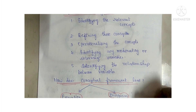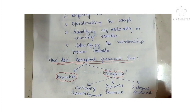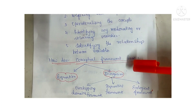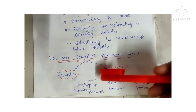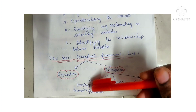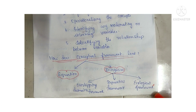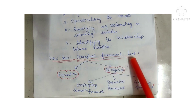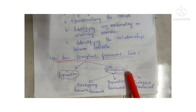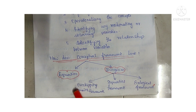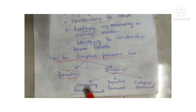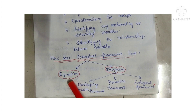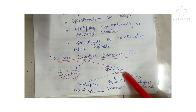How does a conceptual framework look? Either the conceptual framework will look like an equation form, or it can look like a diagrammatic form. Under diagrammatic form, there are three subtypes: overlapping domains framework, sequential framework, and ecological framework.